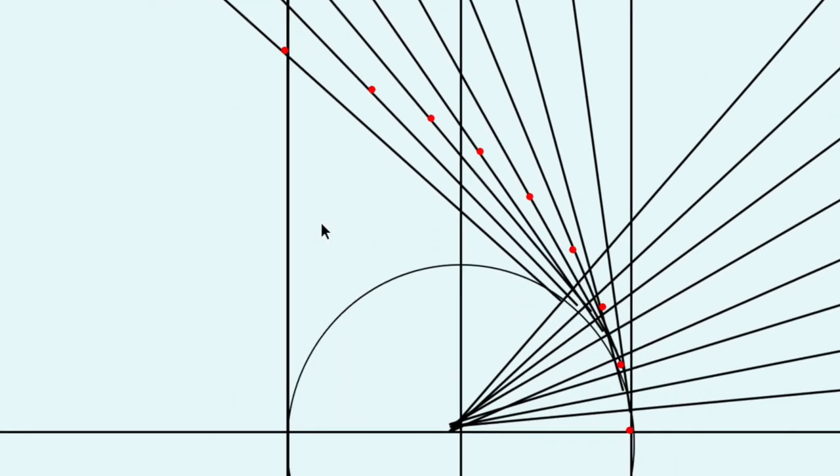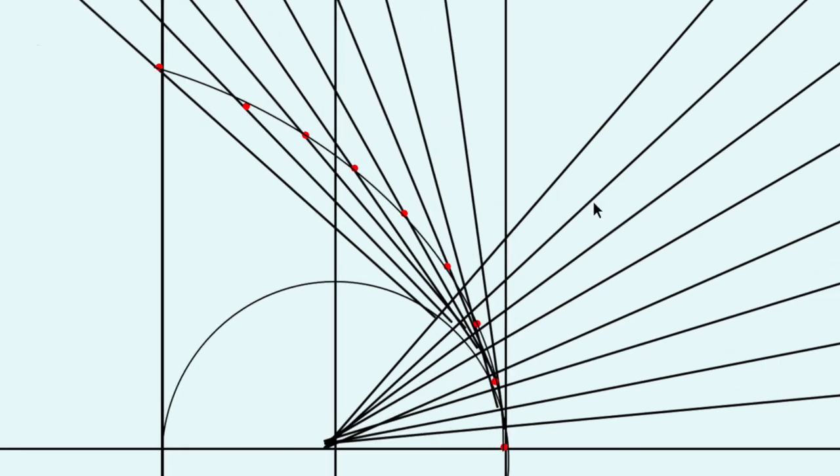Once we've done all that, we've done all our eight dots and we can now run a curve through it. There we finally have our curve. Let's just turn off all of these construction lines, so now you can see what the curve really looks like.